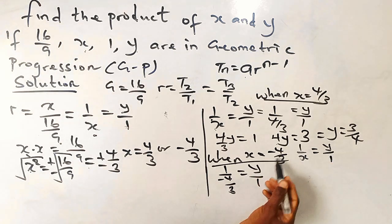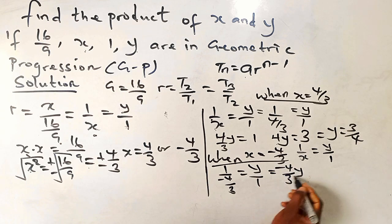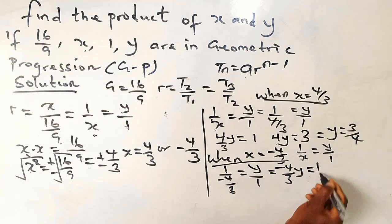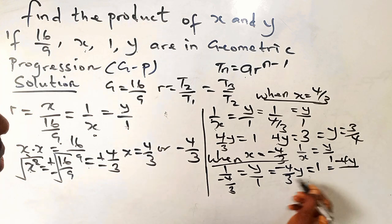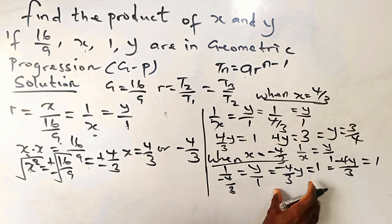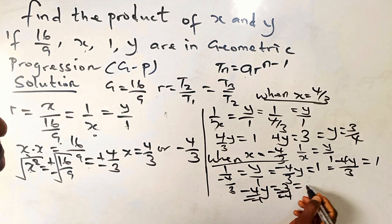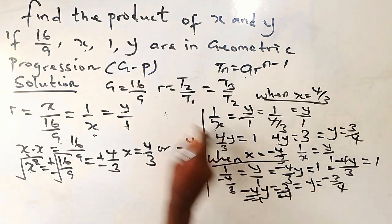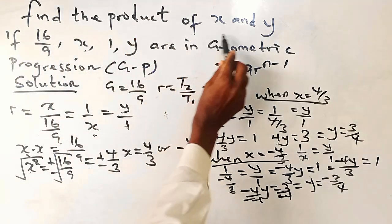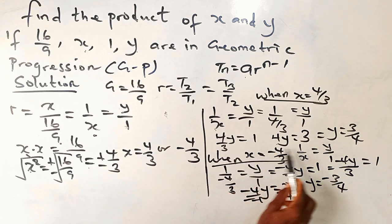When x equals minus 4 over 3, we substitute into 1 over x equals y. So 1 over (minus 4 over 3) equals y. Cross-multiplying gives minus 4y over 3 equals 1, so minus 4y equals 3. Dividing both sides by minus 4, y equals minus 3 over 4.